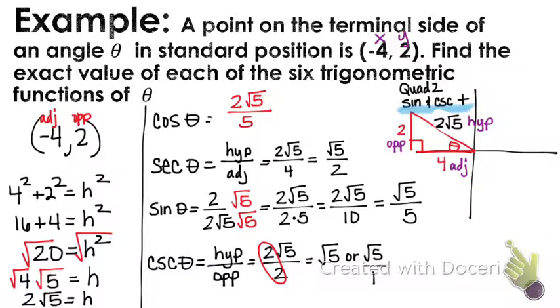Those are the hardest 4 because those 4 have the square root in them. They use the hypotenuse. The last two, tangent and cotangent, we only use opposite and adjacent. So that's pretty simple to do. So tangent is equal to opposite over adjacent, which is 2 over 4. And that reduces to just 1 half.